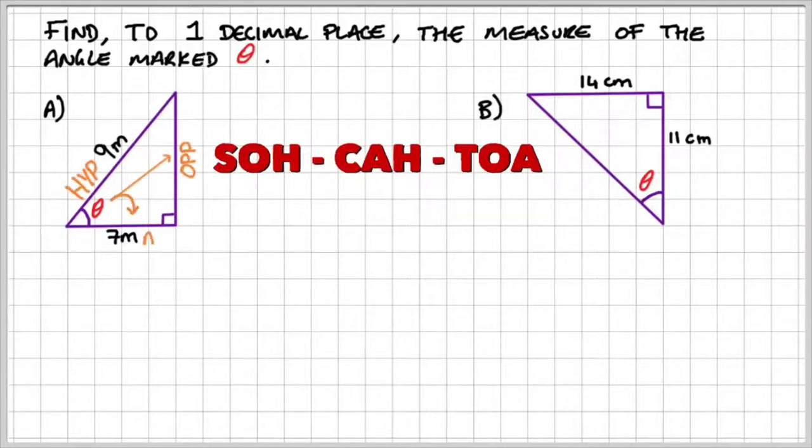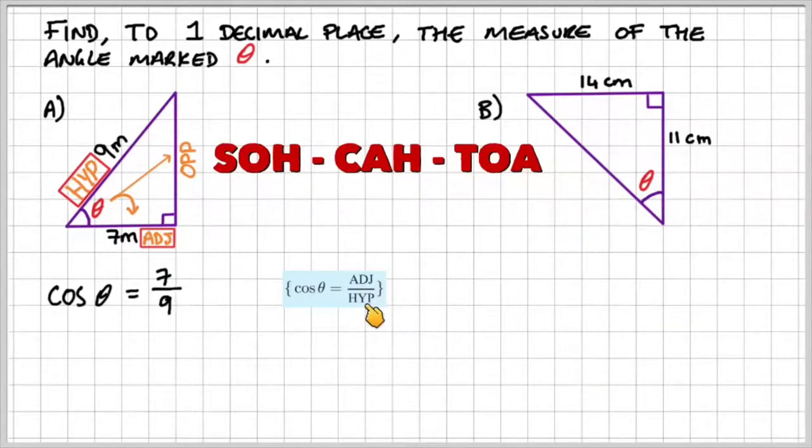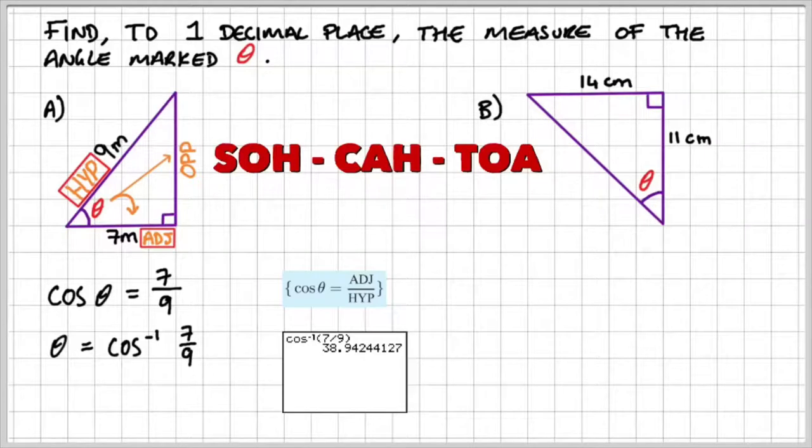So for part A, I know that I have the hypotenuse and the adjacent. So in that case, I'm going to be using the cosine ratio, and cosine is adjacent over hypotenuse. So I can set this up by saying cosine theta is equal to 7 over 9, and then theta is equal to the inverse of cosine, 7 over 9. And then if I do that on my calculator, I get theta is equal to approximately 38.9 degrees.